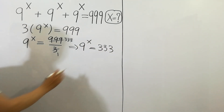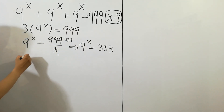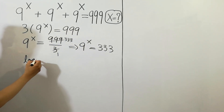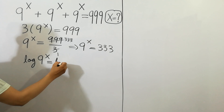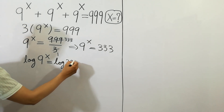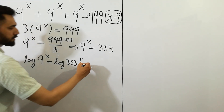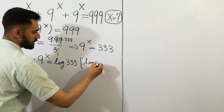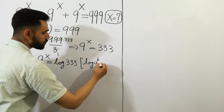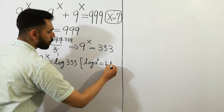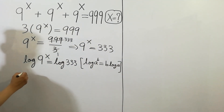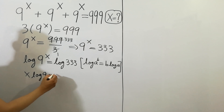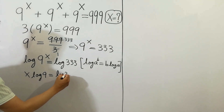Now take log on both sides: log of 9 to the power x is equal to log of 333. Since log a to the power b is equal to b times log a, we can write x times log 9 is equal to log 333.